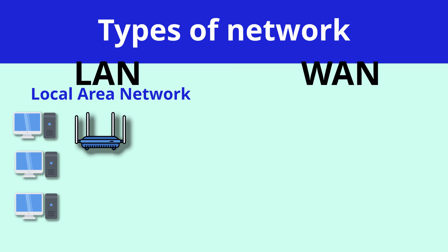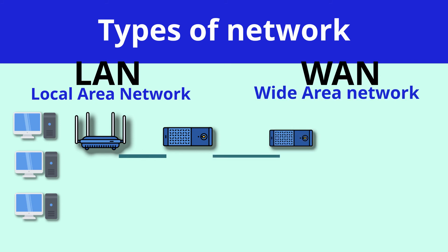When we connect all of these LANs together, then we have something called a wide area network, which is a WAN. So your switch connects to a router, and these routers connect all of the other networks together, and then we have a WAN.